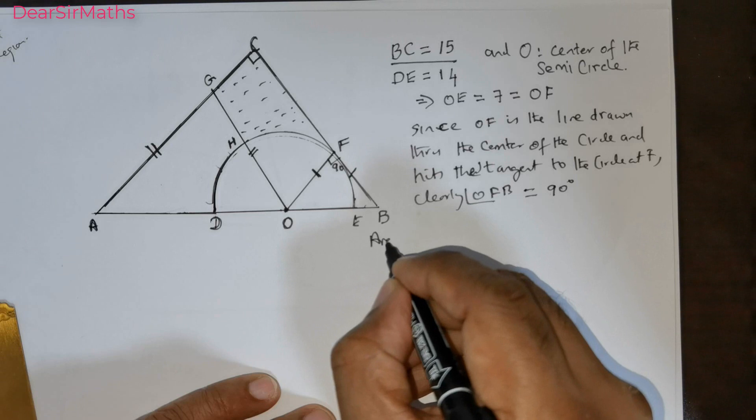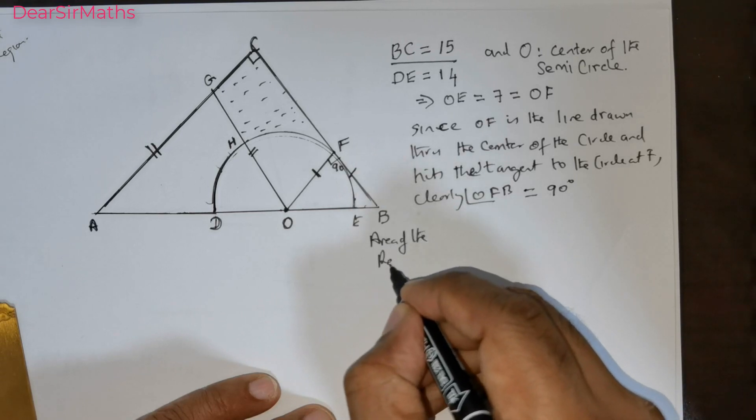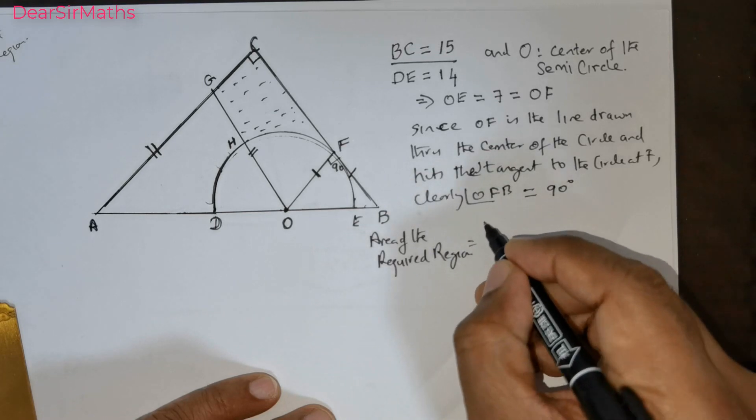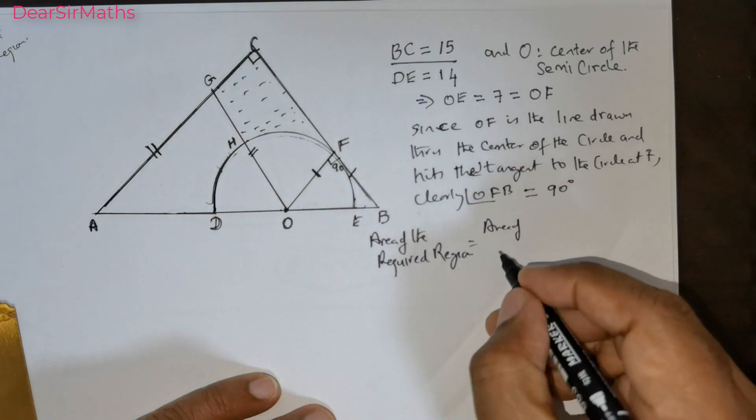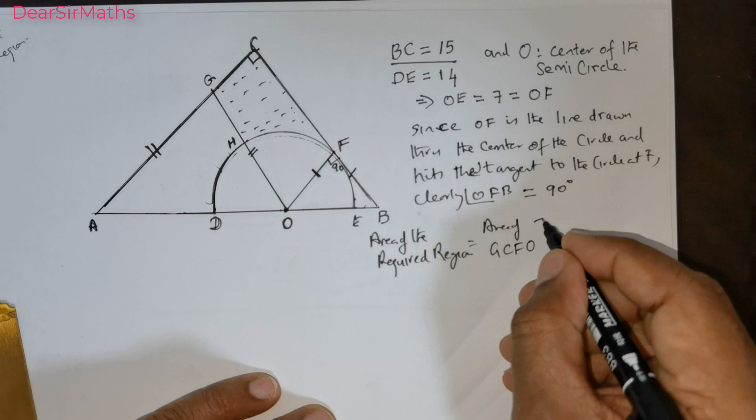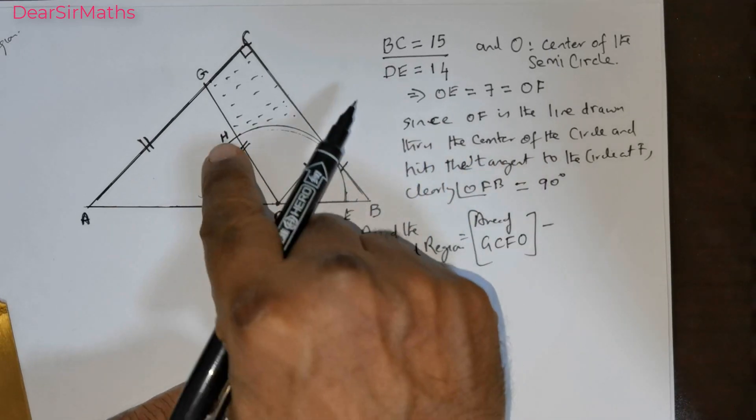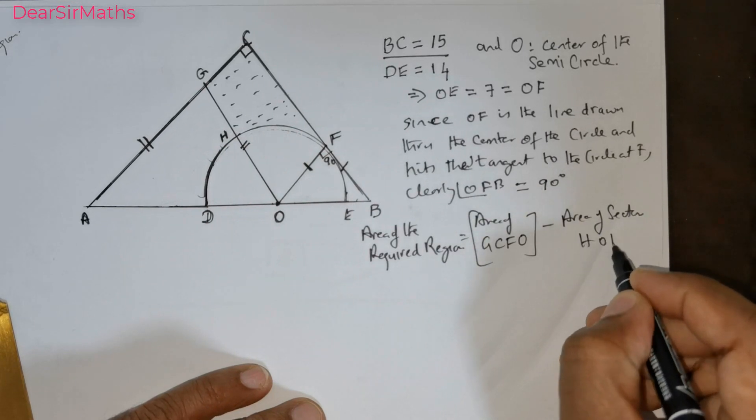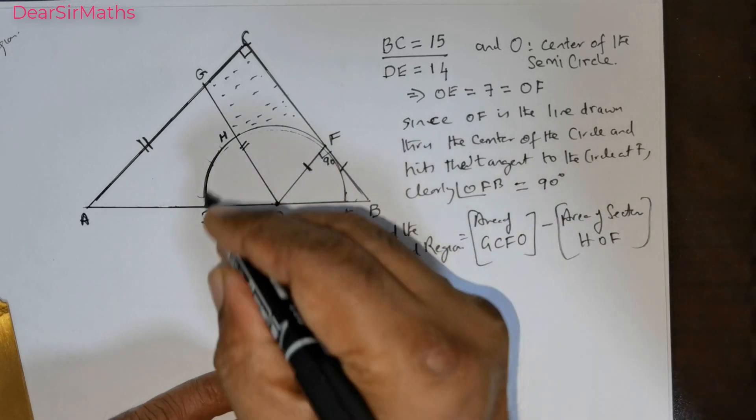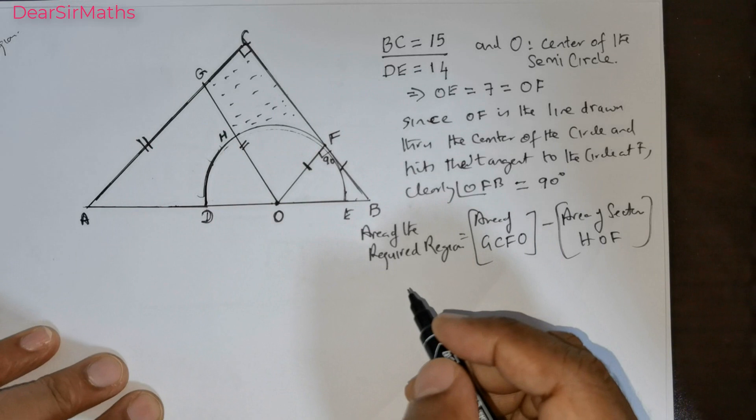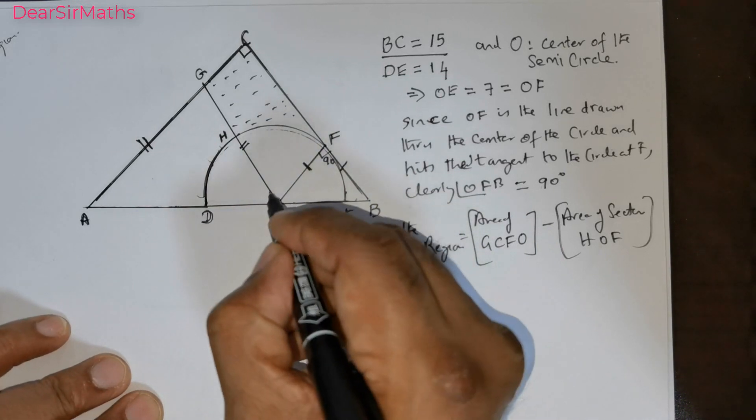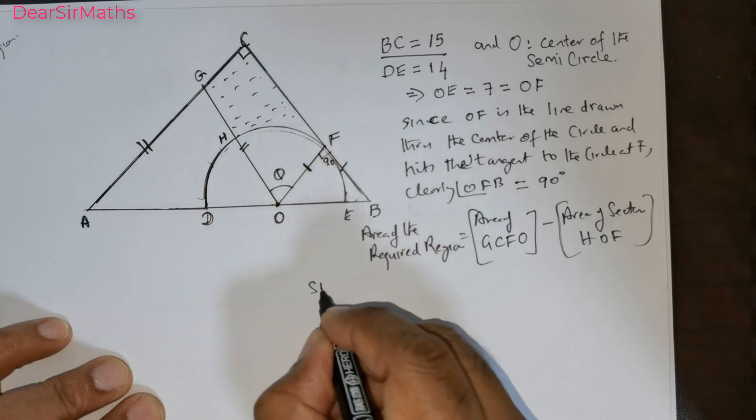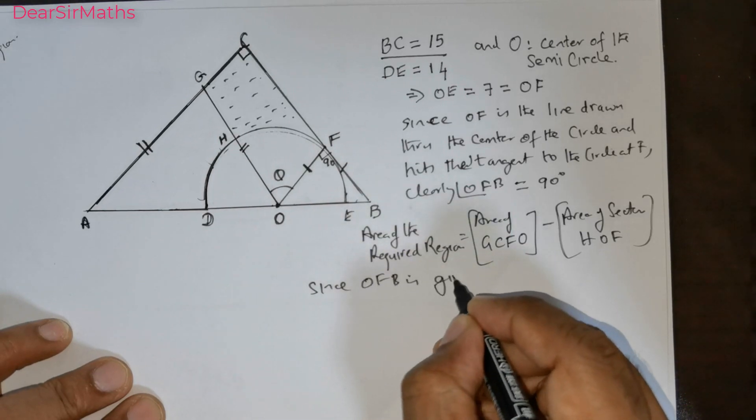We have been asked to find the area of the shaded region. Area of the required region will be equal to area of GCFO, the quadrilateral, minus the sector area of sector HOF. We need to get this sector. To get the area of the sector, we need to get this angle theta. Since OF is given to be isosceles, they will have the same base angle.